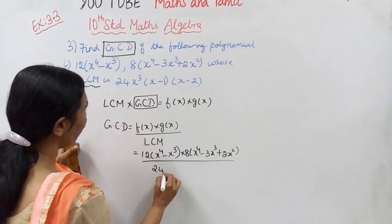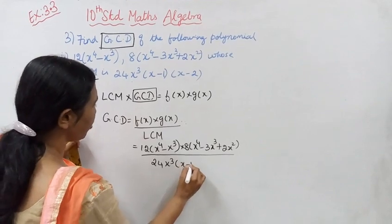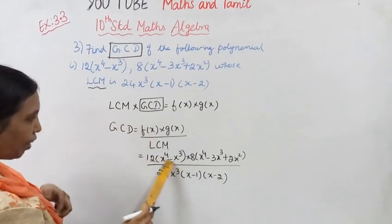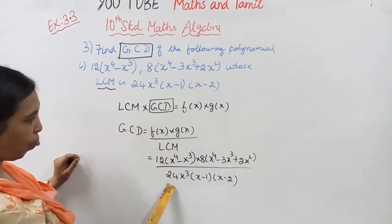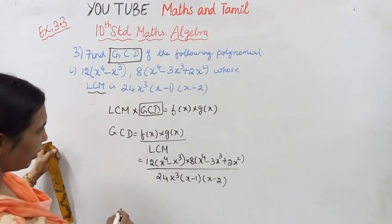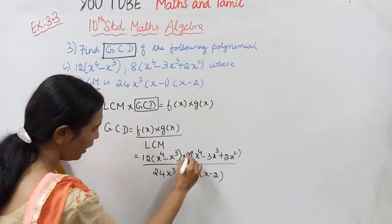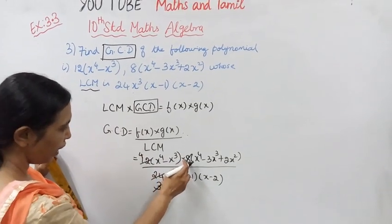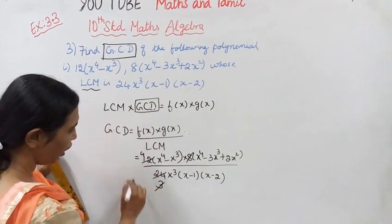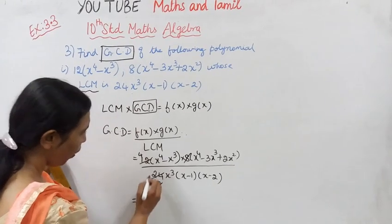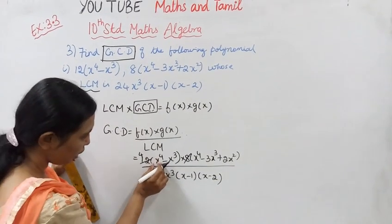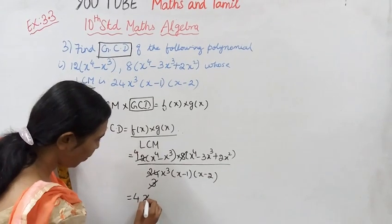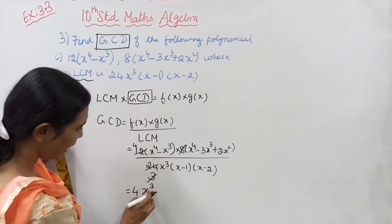The LCM is 24x³(x minus 1)(x minus 2). So one term is 24x⁴ minus x³, and another term is x⁴ minus x³.